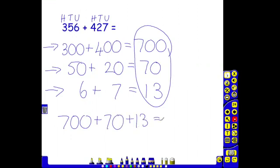And the children would be encouraged to do seven hundred add 70 is easy, 770. Add the ten from our 13 is 780. Add the three, 783, giving us our final answer of 783.